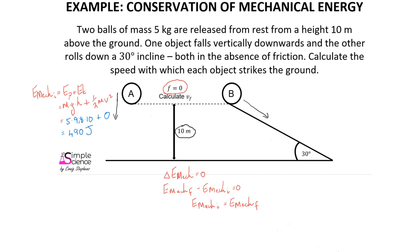So initially this object has 490 joules of mechanical energy. The same is true for object B, because object B is also at rest and also at a point 10 meters above the ground. Therefore its initial mechanical energy is also 490 joules.